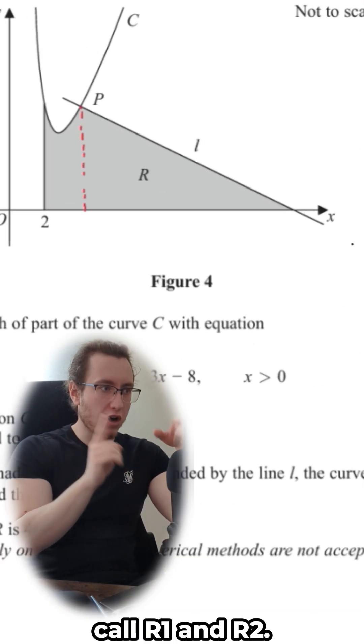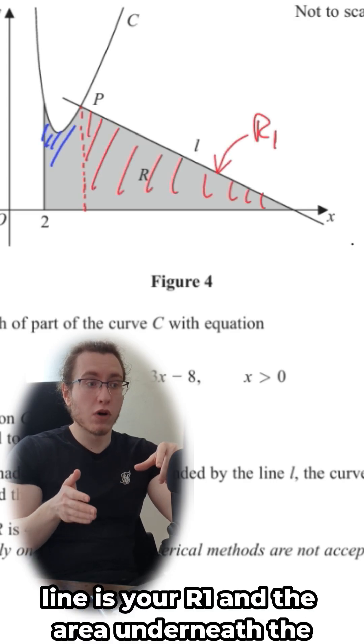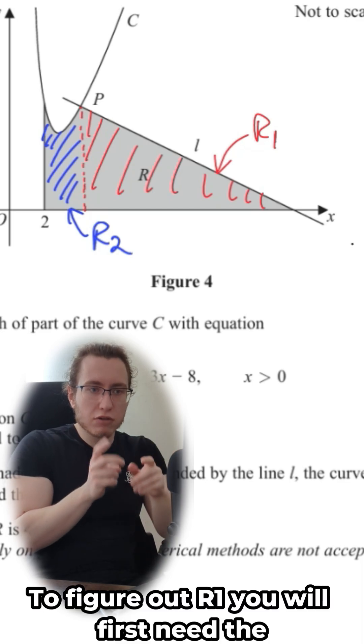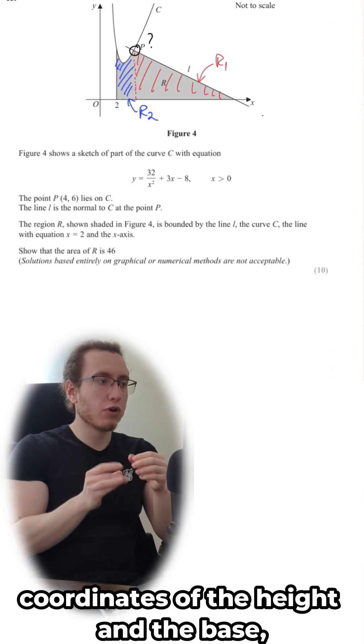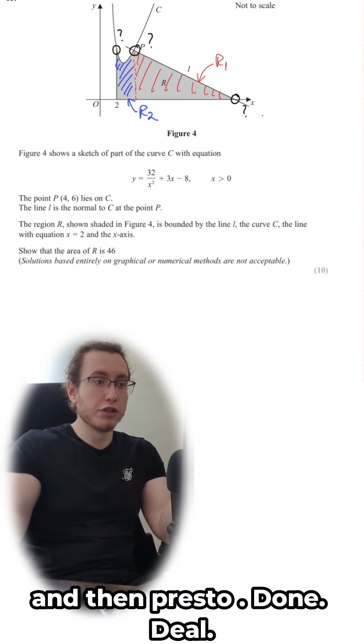So the area R is composed of what I will call R1 and R2. The area underneath the straight line is your R1, and the area underneath the curved bit is R2. To figure out R1, you first need the coordinates of the height and the base, because then you can just do the area of a triangle and then presto, done deal.